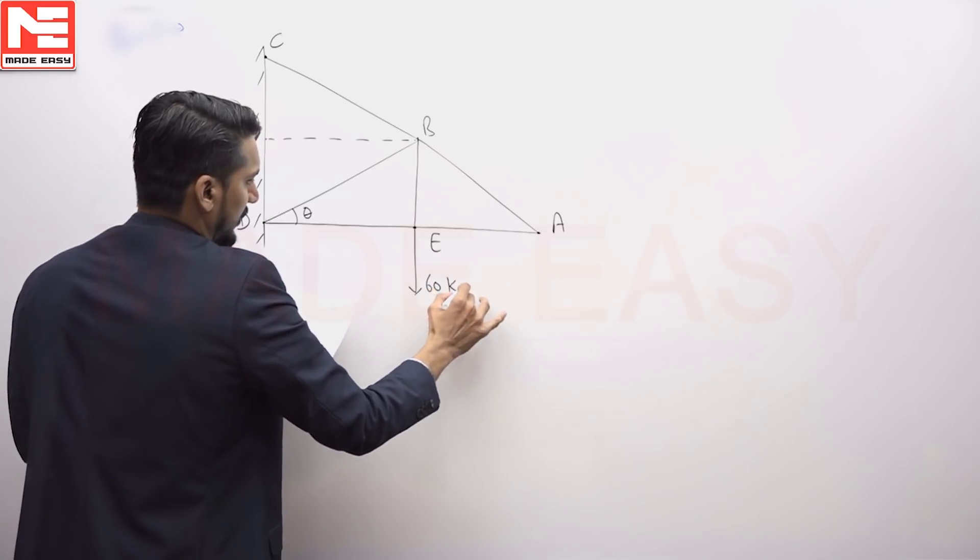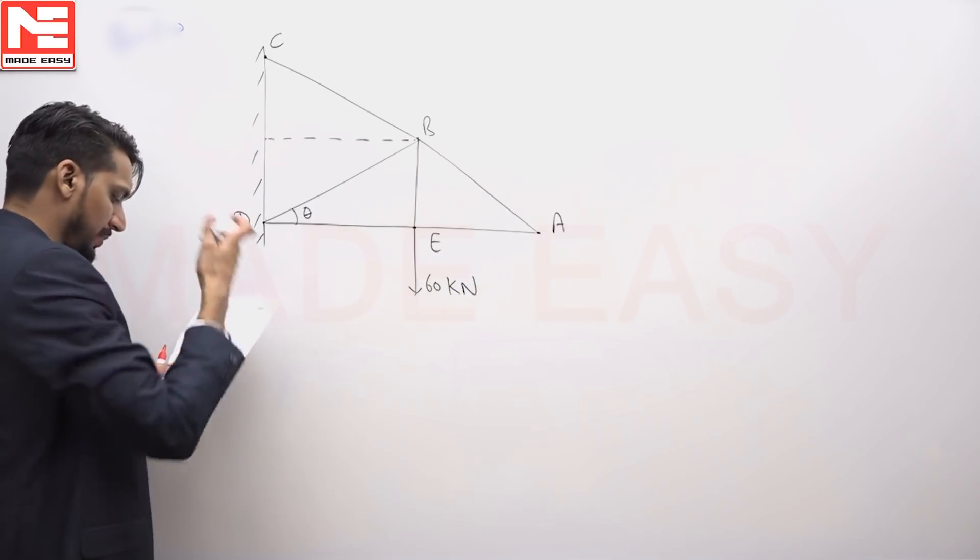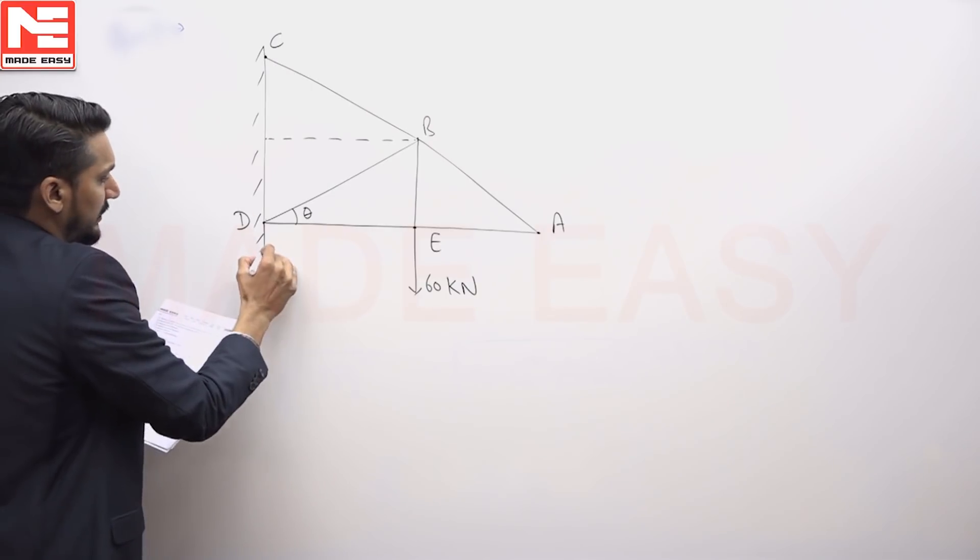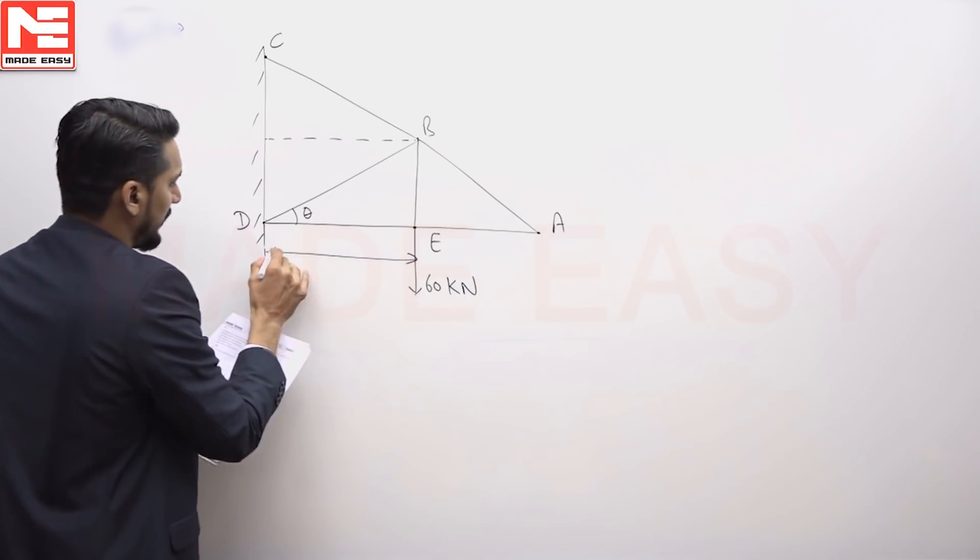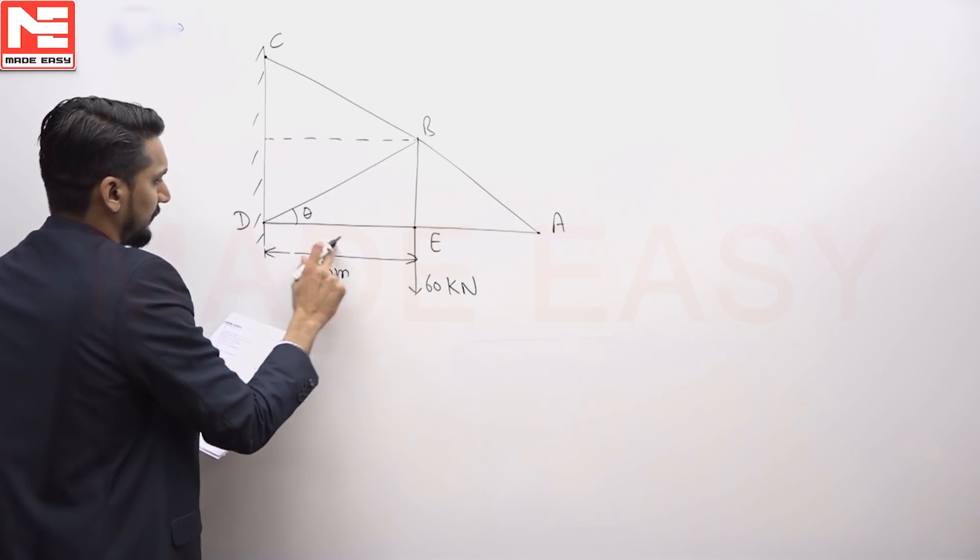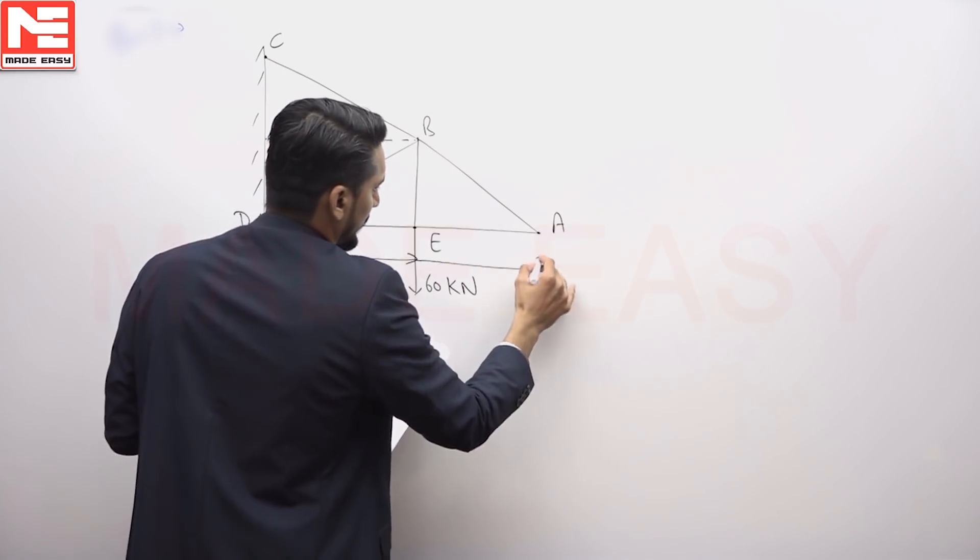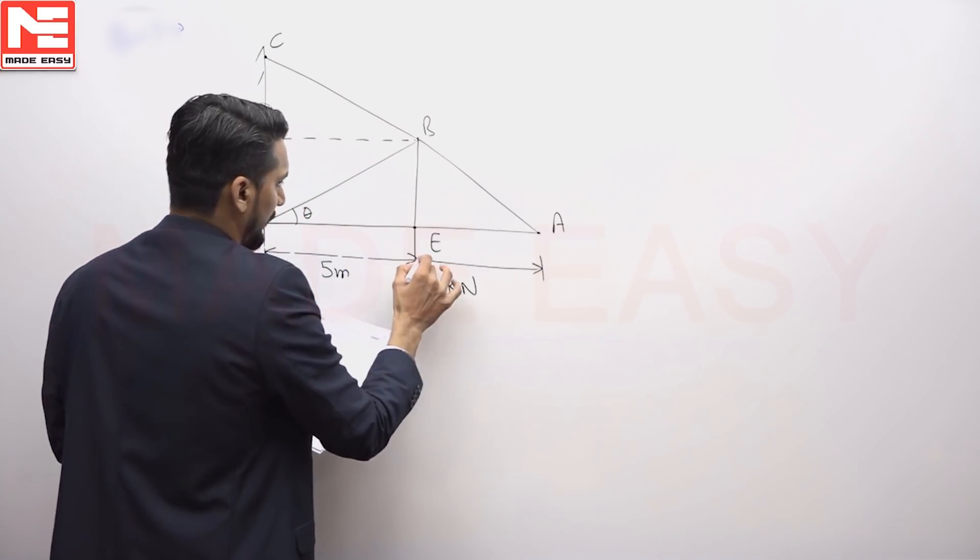Here is 60 kN acting at point or joint E. It is given as, this is given as 5 meter and again this is also given, 5 meter.